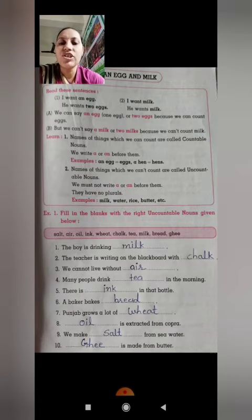Number 1: The boy is drinking milk. Joh boy woh milk pi raha hai. Number 2: The teacher is writing on the blackboard with chalk. Joh teacher hai woh blackboard mein chalk se likh rahi hai.